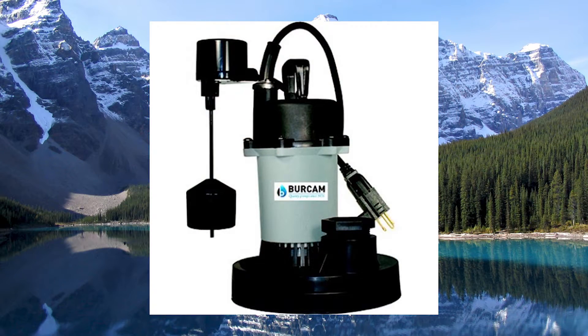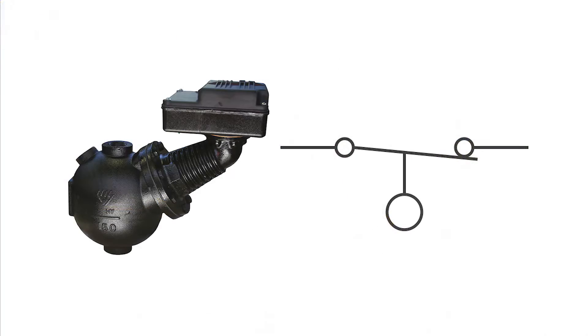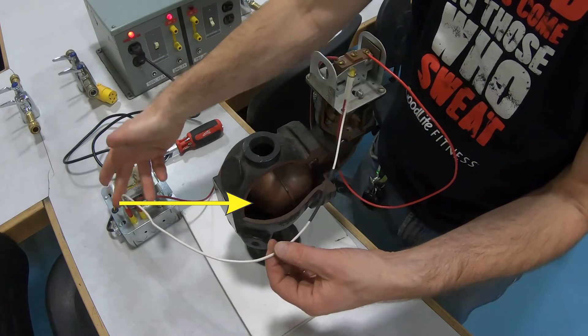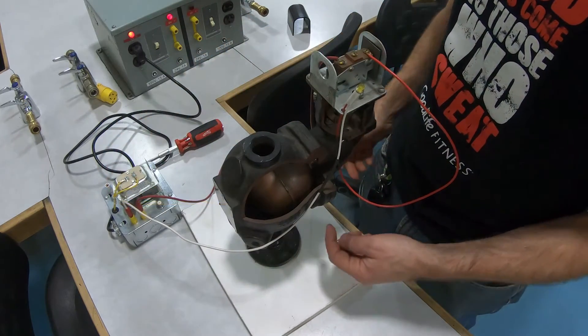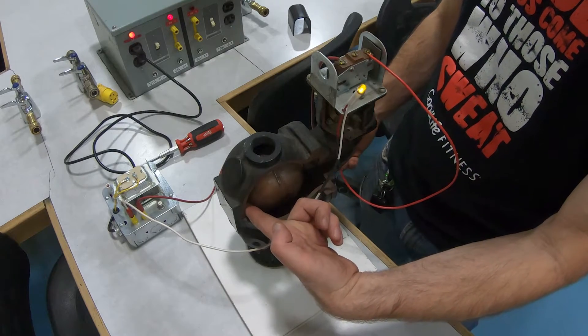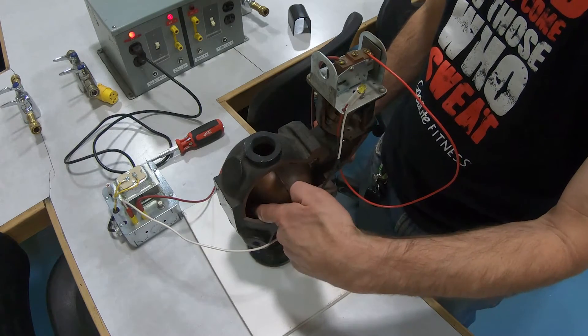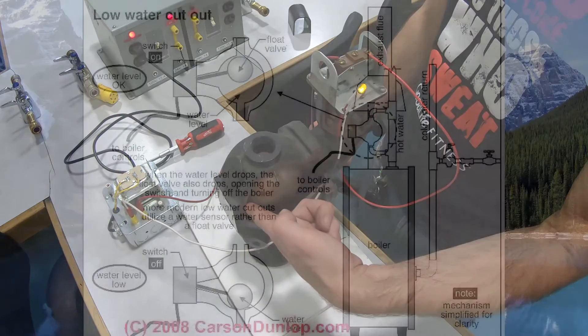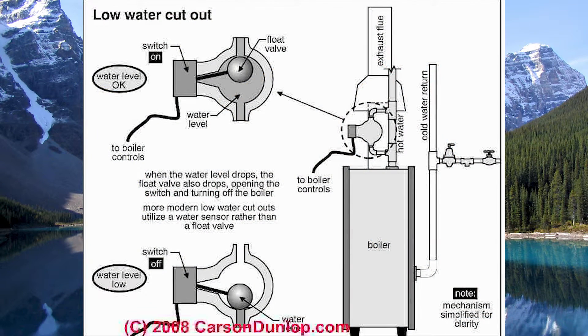The next type of device we come across in the field is a level sensing switch. A low water cutoff is a really good example of this. We have a ball float in there, and when the water from the system gets high enough, the ball floats up and the switch is closed. Notice that the LED light came on. This is useful in boiler systems where we want to protect the boiler from having low water conditions.